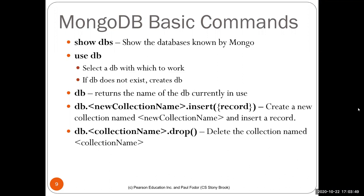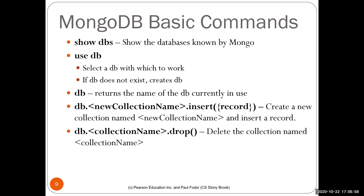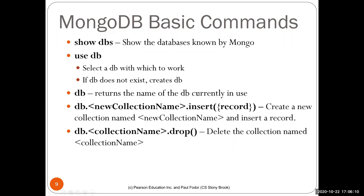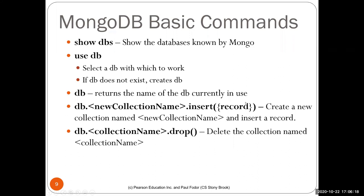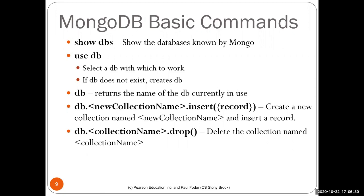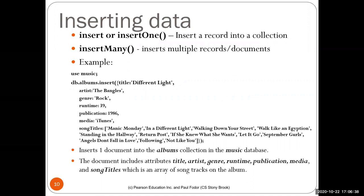Basic MongoDB commands: 'show dbs' shows the databases known by the current MongoDB server. 'use db' selects a database to work with — if a database doesn't exist, it will create it. 'db' returns the name of the database currently in use. 'db.newCollection.insert()' with a record creates a new collection and starts inserting into it. 'drop()' deletes the named collection. The first command we learn is 'insertOne', which inserts one record into a collection, and 'insertMany' inserts multiple records.